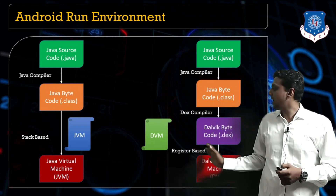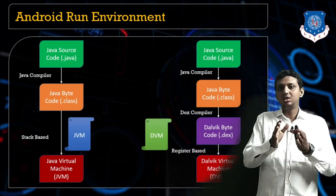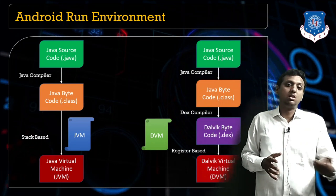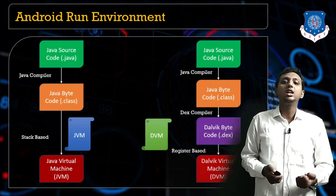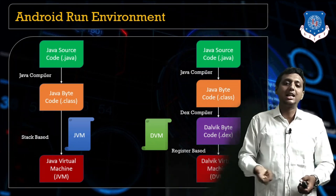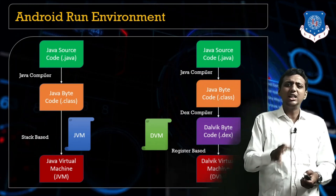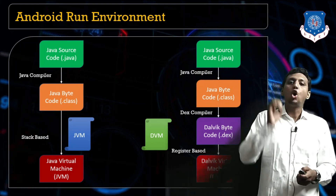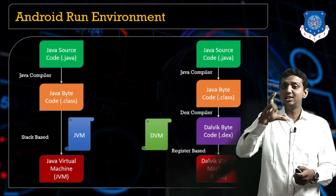The DVM is totally based on register-based architecture. So the first difference: JVM works on stack-based architecture, DVM works on register-based architecture. JVM takes the class file as input; DVM takes the .dex file as input. Why do we need to convert to .dex? Because the .dex file consumes less memory and less power, which is suitable for smartphone and smaller devices.